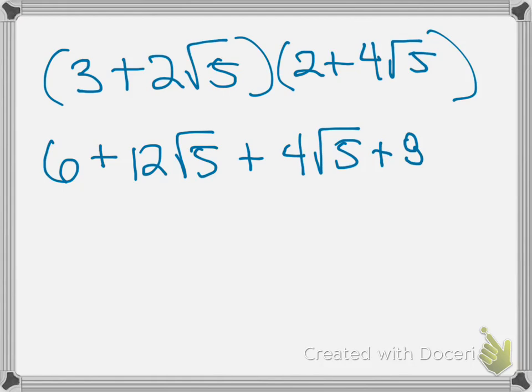Radical 5 squared is just 5. That's supposed to be an 8. So we can simplify this a bit. We've got 6 plus 12 radical 5 plus 4 radical 5. Because we are taking two square roots of the same type, the square root of 5, we can combine those two terms.